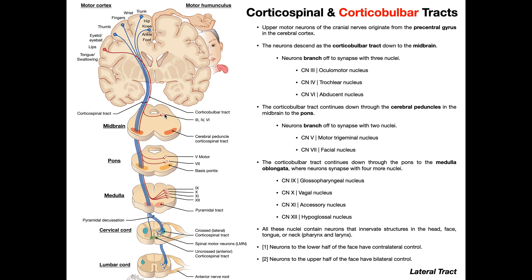There are a lot of important things to understand here. These nuclei — whether in the midbrain, the pons, or the medulla oblongata — are clusters of cell bodies whose axons make up the cranial nerves: lower motor neurons that innervate the muscles of the head and the face, and some in the neck and pharynx. All of these nuclei contain neurons that innervate structures in the head, the face, the tongue, the neck, and by that we include the pharynx and the larynx.